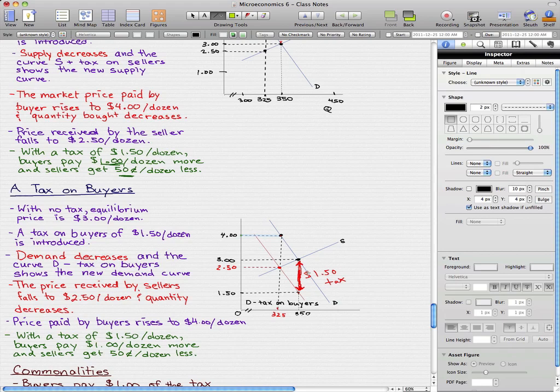With a tax of $1.50 per dozen for buyers, what happened is that the demand curve dropped to the new demand curve called demand minus tax on buyers. This made the quantity decrease, and it also made the price received by sellers drop from $3, which was the original price without tax, to $2.50 with tax.